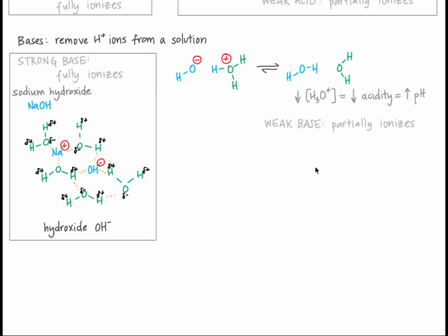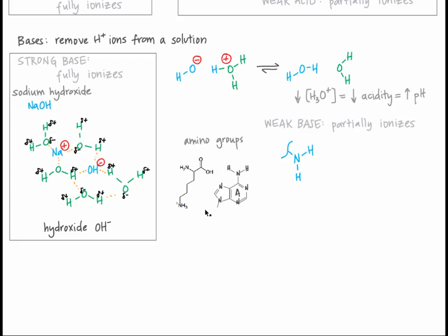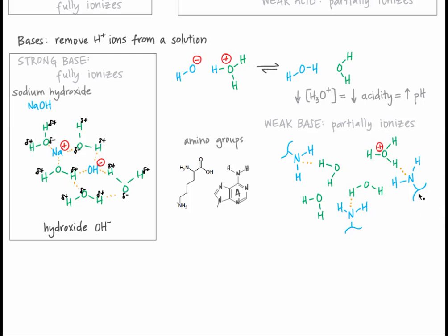Most bases in the body are weak bases. An example of a weak base is an amino group, or NH2, which is found on some amino acid side chains, the N-terminus of polypeptide chains, and nitrogenous bases. The nitrogen of amino groups can interact with a hydrogen ion to form NH3+. This hydrogen ion could have come from hydronium, leaving water, or it could have come from water, leaving hydroxide. Hydroxide can then take a hydrogen ion from hydronium, leaving water.